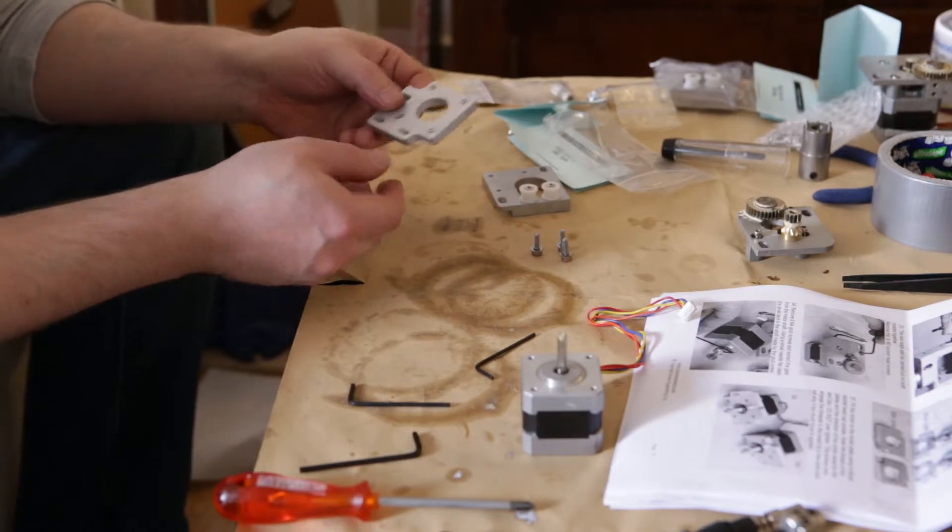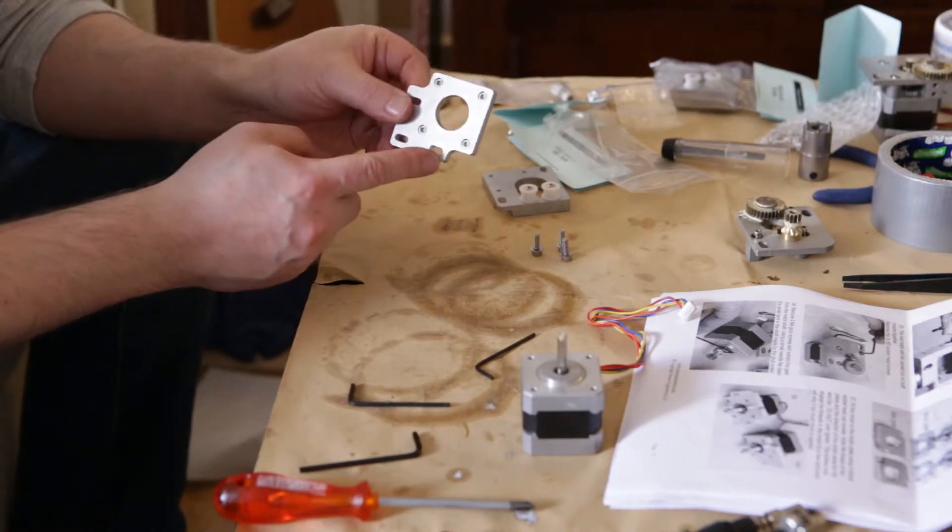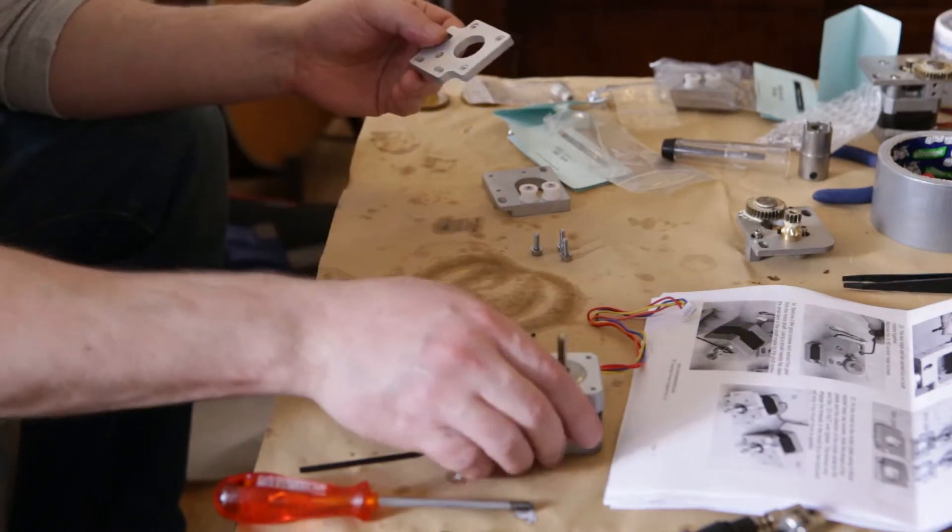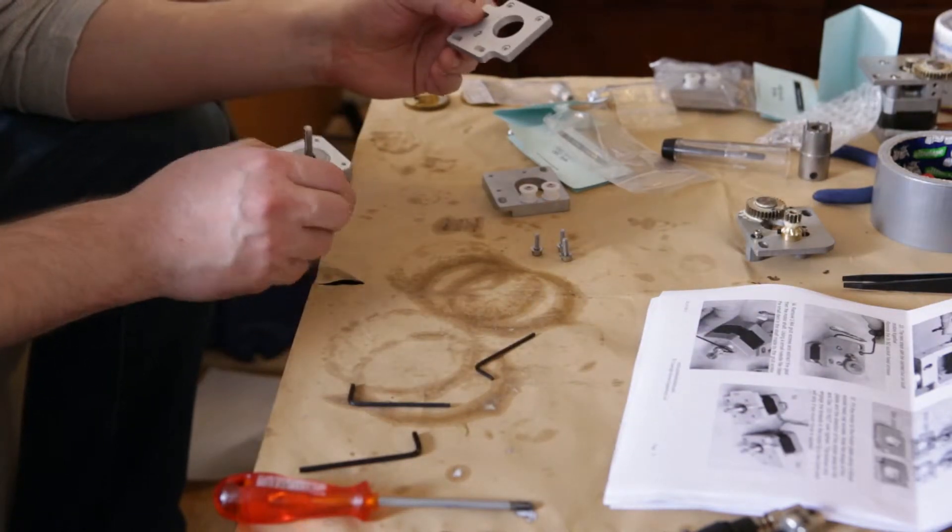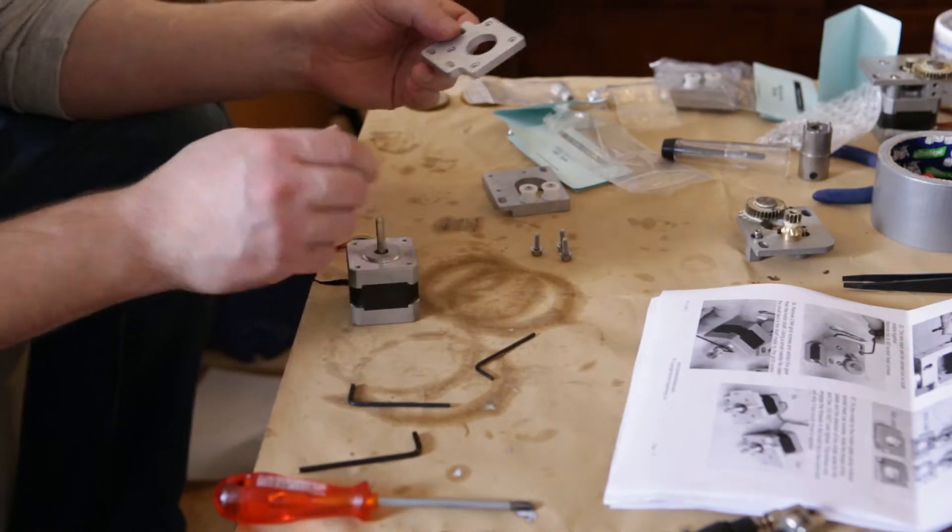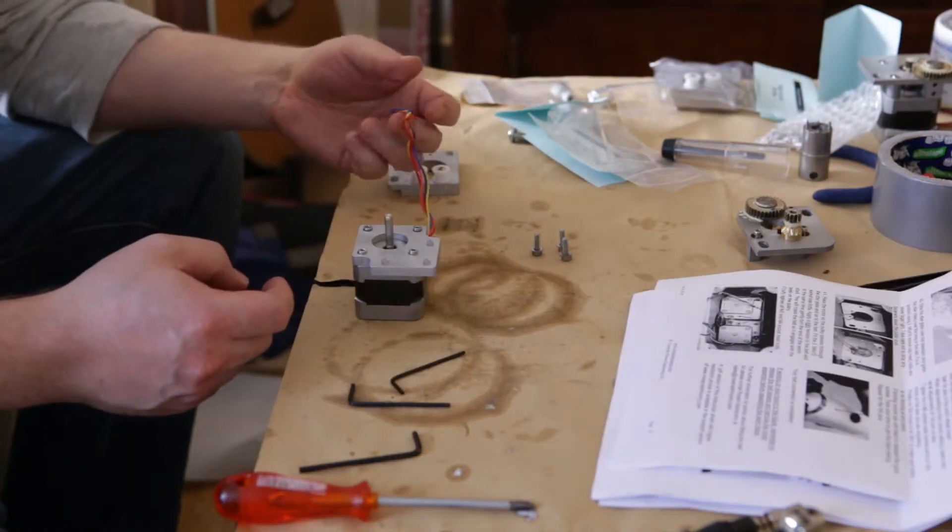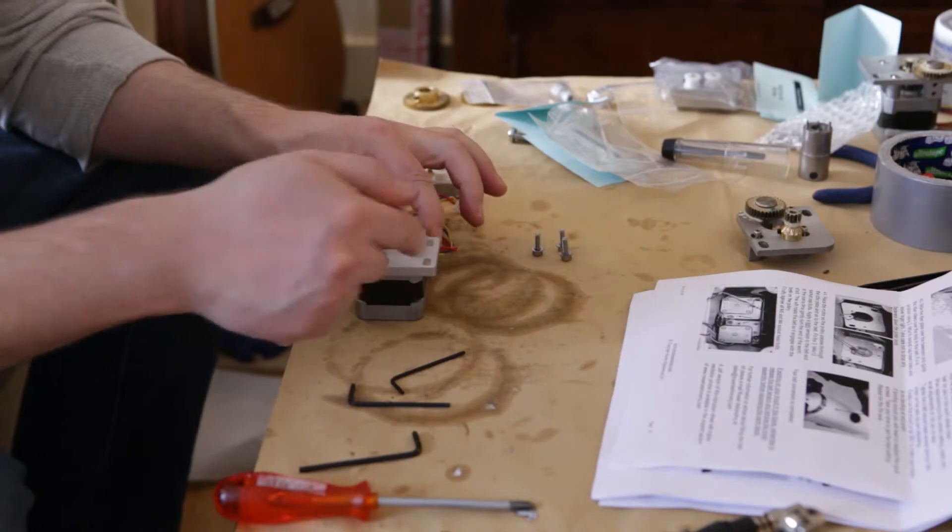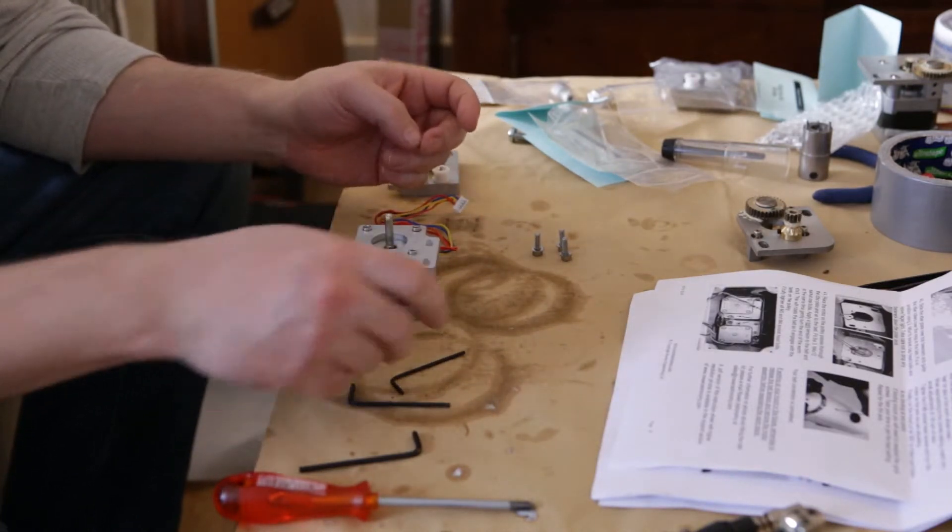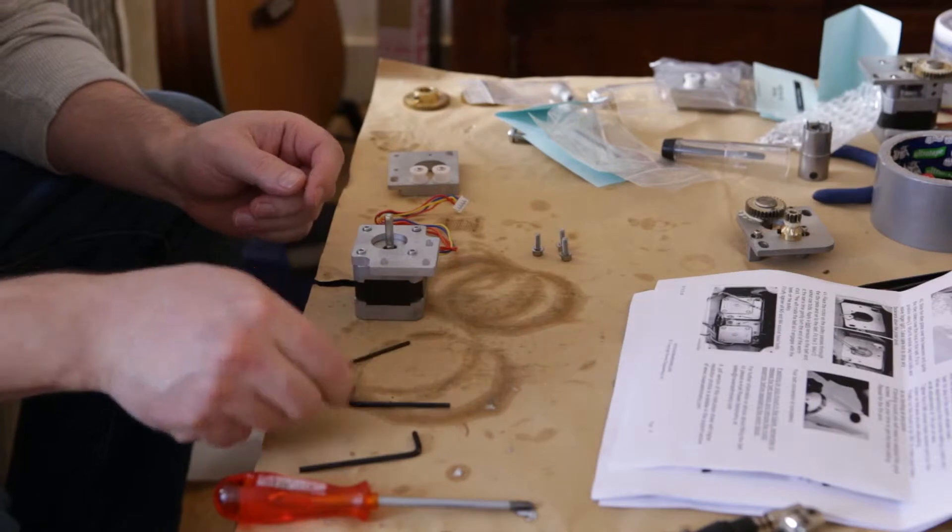So this is the plate that will go into the motor. And here you have to be a bit careful and make sure that it's going the right way around. When you have the wires pointing to the left and these three holes pointing to the right, that's the correct way of fitting this plate.